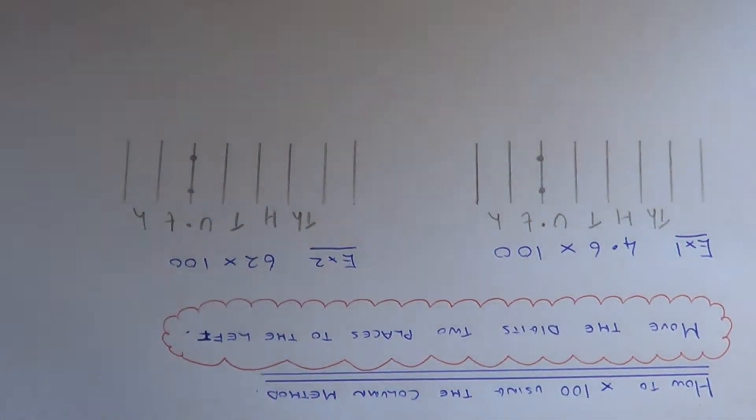I'm going to show you how to multiply a number by 100 using the column method. All you need to remember is to move the digits two places to the left. Let's have a look at example one.